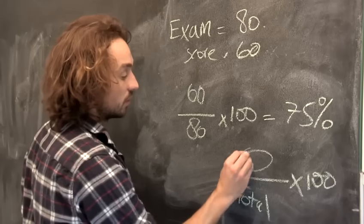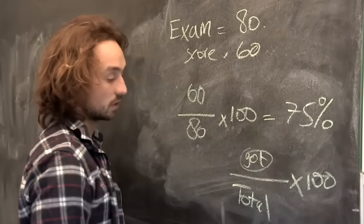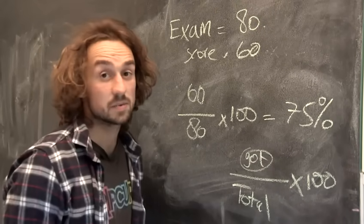You take the number that you've got, put it over the total, and multiply by 100. That's how to find a percent.